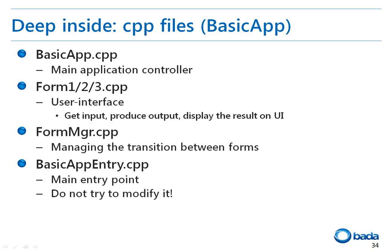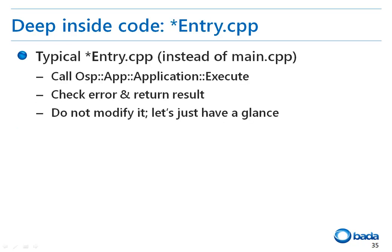Finally, we have the entry.cpp file, which is the actual main entry point. This file should not be modified, as editing the content may cause problems, so it is recommended to leave it as it is. The entry.cpp file performs the role of the main.cpp file in a C program, consisting of functions to run the actual application class and to return the error code from the application. It is not recommended to edit this file.